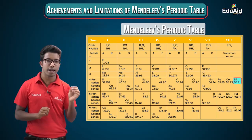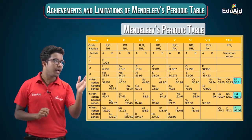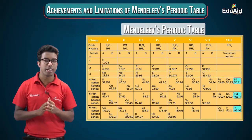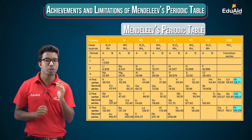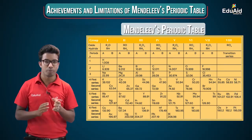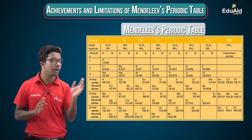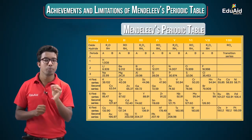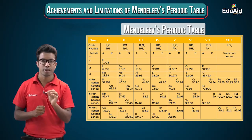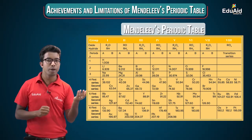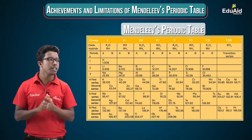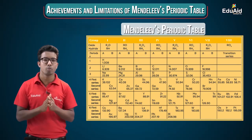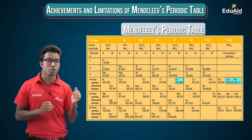Similarly, in the case of nickel, the elements below it — palladium and platinum — also have similar properties. So nickel, palladium, and platinum should be placed in the same group. Since cobalt and nickel were not following the atomic mass trend, Mendeleev gave more priority to their properties, placing cobalt right before nickel. The same reasoning applies to vanadium and chromium.